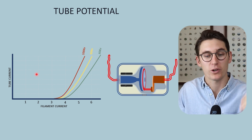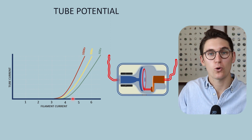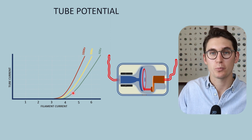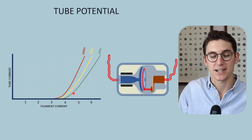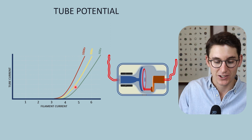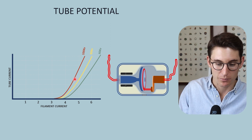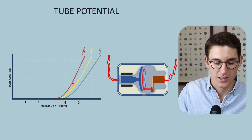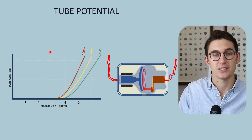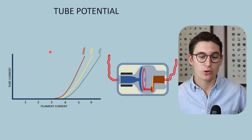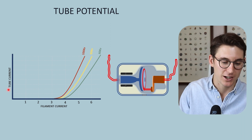At 4 mA, our 60 kilovolt tube potential results in a relatively low tube current. As we increase that kilovoltage to 80, we get a significant jump in tube current, and an even more significant jump when we go to 100 kilovolts. Our relationship between tube potential and tube current is exponential — an increase in tube potential results in an exponential increase in our tube current.